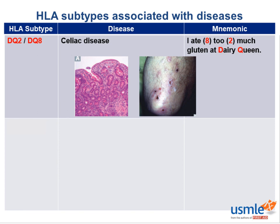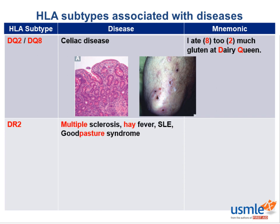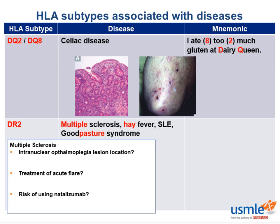HLA-DR2 is associated with multiple sclerosis, hay fever, SLE, and Goodpasture syndrome. Multiple sclerosis is autoimmune inflammation and demyelination of the central nervous system. One finding is internuclear ophthalmoplegia, where the affected eye cannot adduct while the other eye is abducting, causing nystagmus in the unaffected eye. That lesion is in the medial longitudinal fasciculus, or MLF.